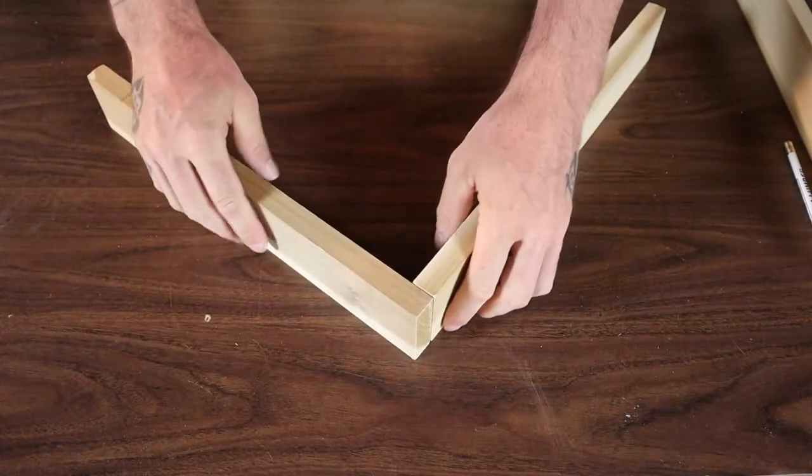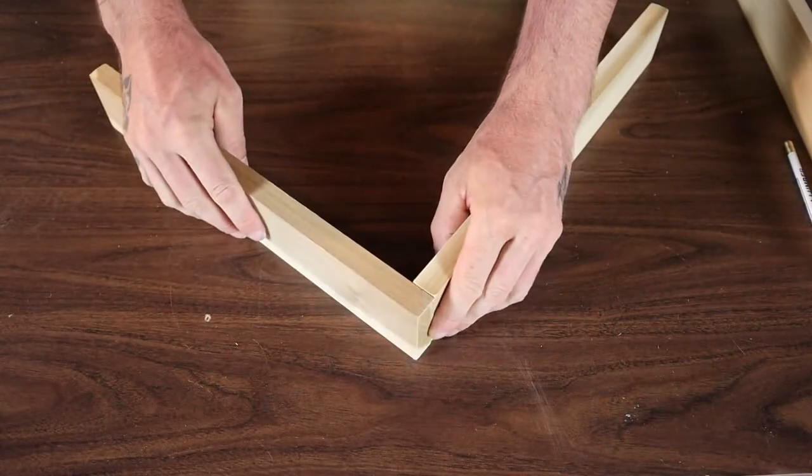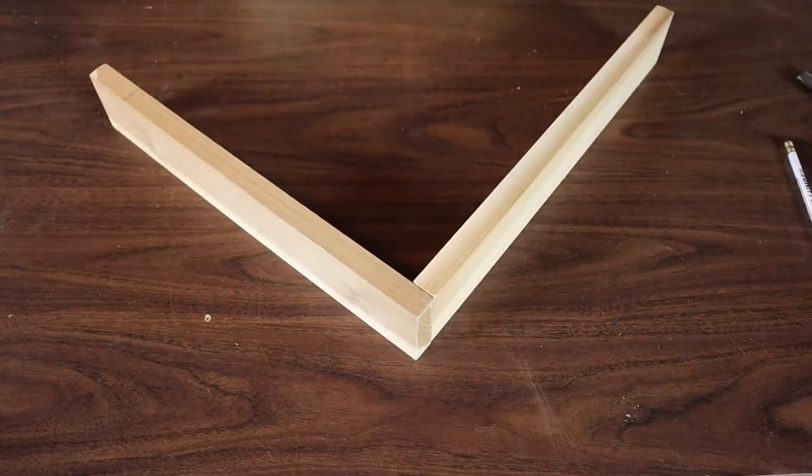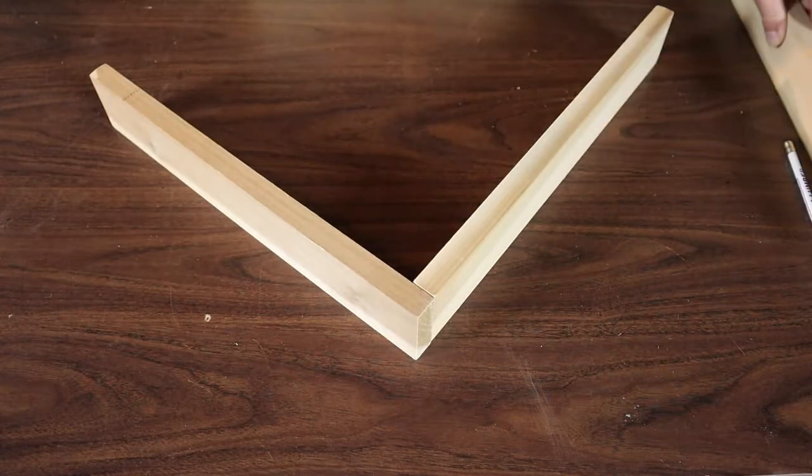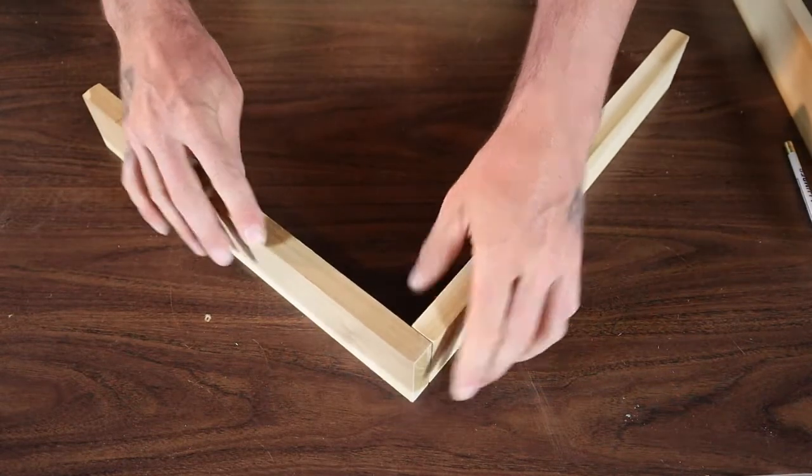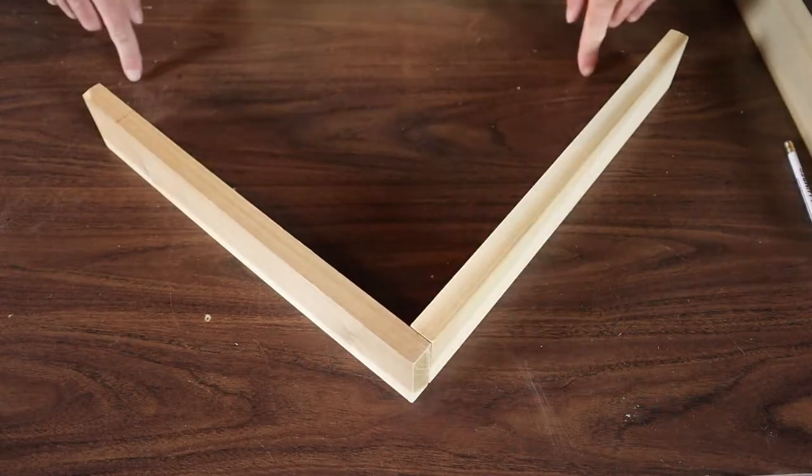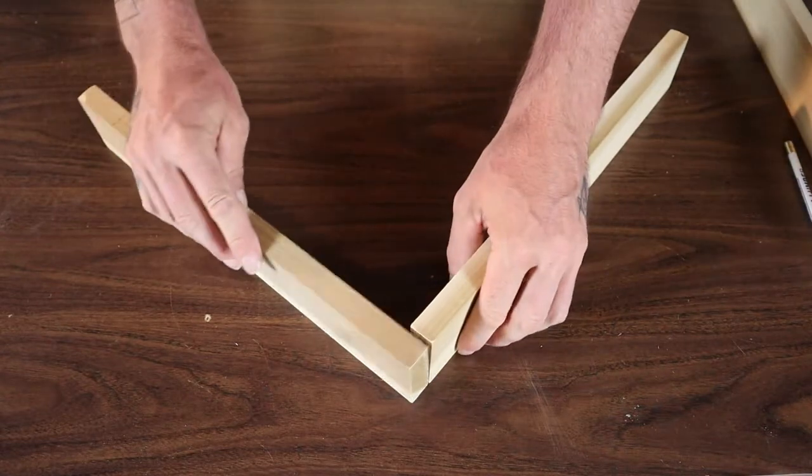So the next step is actually going to be to glue and nail the top of our triangle together. Because we're not doing any specific measurement or angles on the bottom, we're going to want to get that top glued and nailed together. That way it's a definite angle that's going to stay the same and we can lay out our bottom piece of the triangle. So we'll go ahead and do that now.